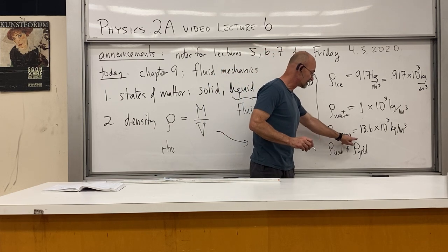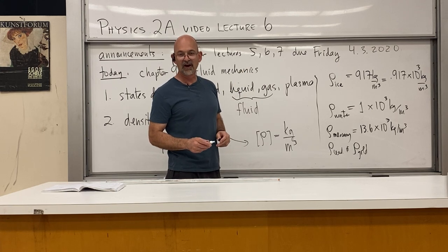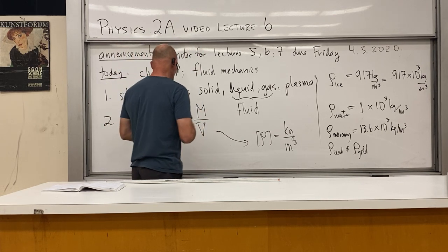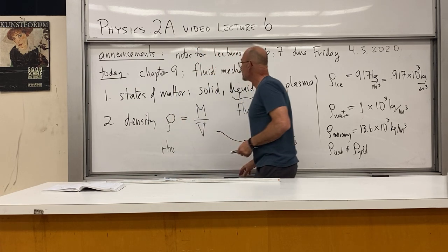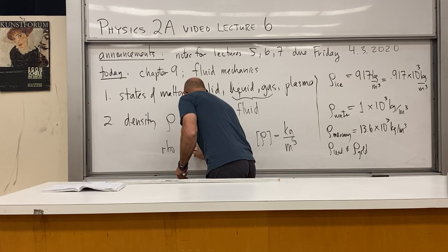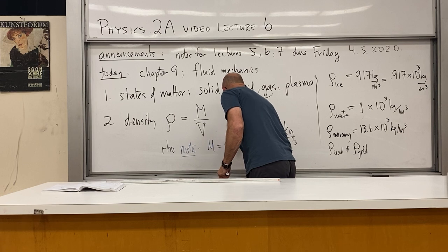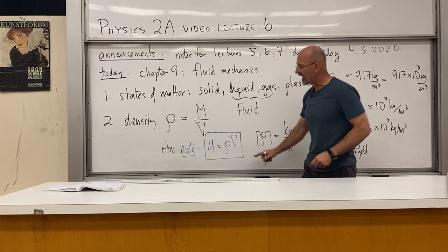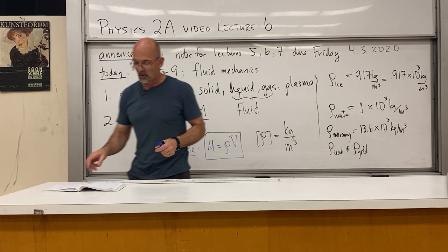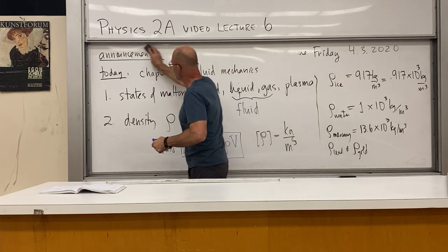You can look up more densities in your book. One important note: we can write mass as density times volume — we'll use that expression very often. It's just cross-multiplying from the density definition: m = ρV.